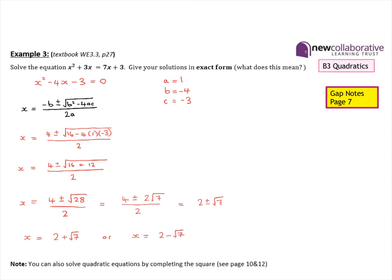The question asked us to give our solutions in exact form. That means in a case like this, where we end up with a surd as part of the answer, we leave our solutions in this exact form and don't enter them into a calculator to get a decimal, because that would mean rounding off. So when a question asks for solutions in exact form, we leave them as shown and do not write down rounded decimals.